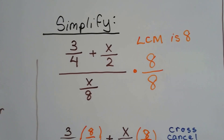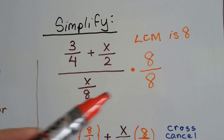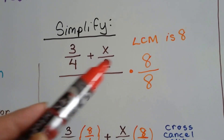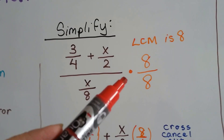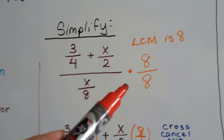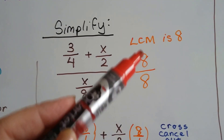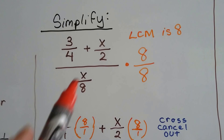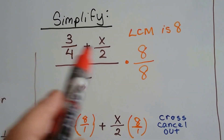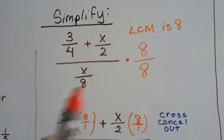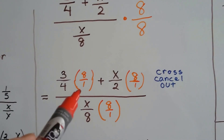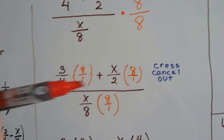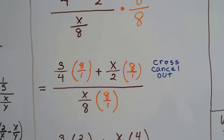So, we can multiply these by 8 over 8. It's the least common multiple, because 4 and 2 can meet at 8. It's the least common multiple over itself, which equals 1 — 8 over 8 equals 1. Now we can just multiply this numerator by 8 and this denominator by 8. I put them over a 1 so that I could just do numerators straight across and denominators straight across and make it easier for my eyes.